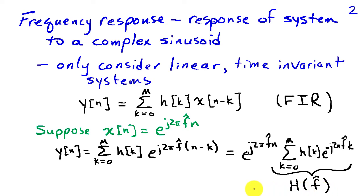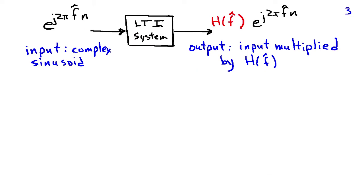It's very important to observe that we put in a complex sinusoid of frequency f-hat, and what came out of the system was also a complex sinusoid with frequency f-hat. This is true of any linear time invariant system: if you put in a complex sinusoid of a given frequency, you will get out a complex sinusoid of the same frequency, and only the amplitude and phase can be changed by the system. The input is multiplied by the frequency response H of f-hat.